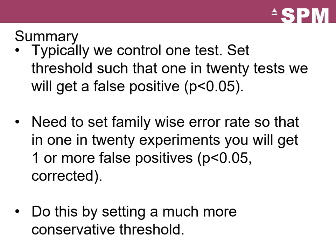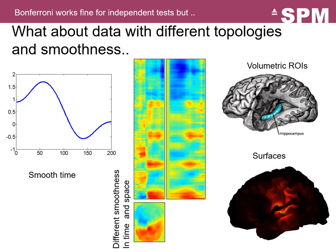So that has been a brief overview of the multiple comparisons problem and Bonferroni correction. Typically we control one test setting a threshold such that 1 in 20 tests gives a false positive, but with many statistical tests we need to set a family-wise error rate so that only 1 in 20 experiments will produce a false positive. We do this by setting a much more conservative threshold. When we set this conservative threshold, if there's spatial structure in the data we risk missing interesting signal.